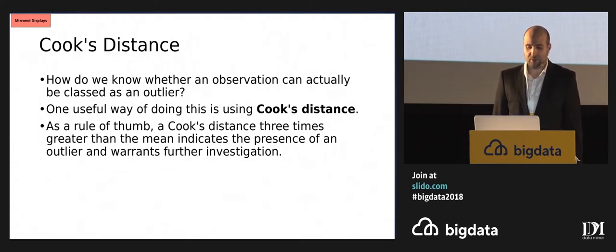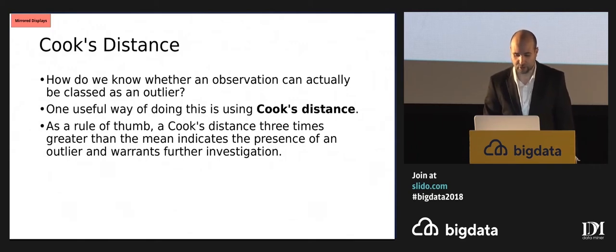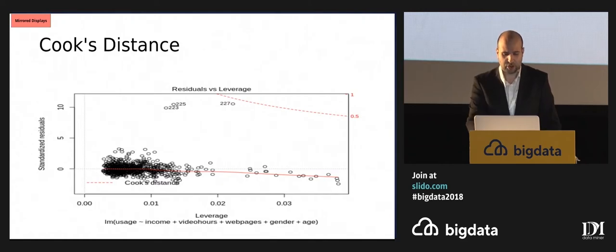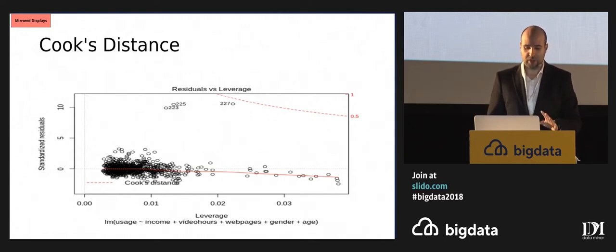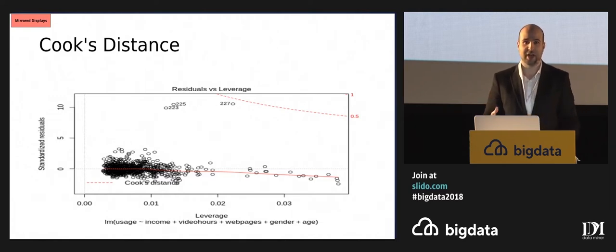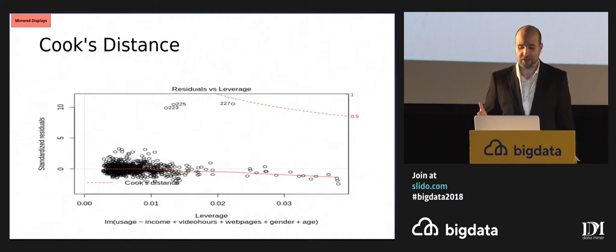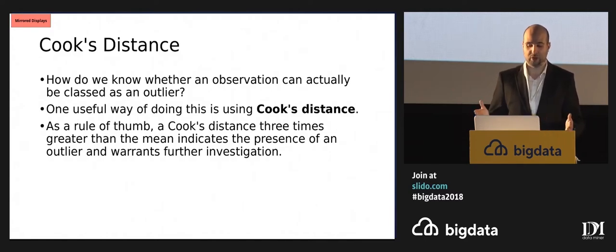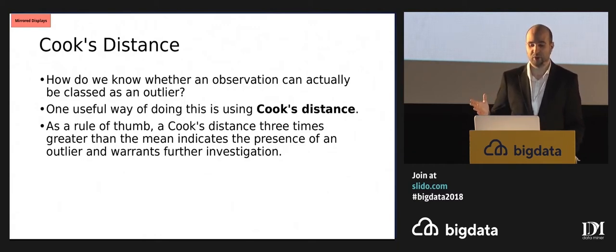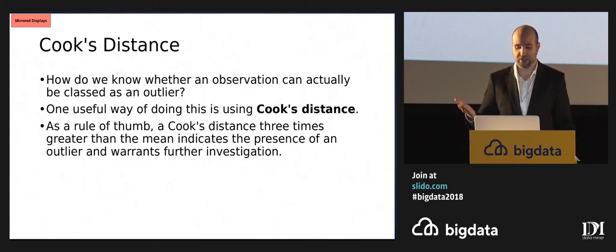In terms of how do we know whether we can actually class an observation as an outlier — you can see that we have many observations at the bottom and then three observations at the top clearly distinct from the rest. But even though we can look at a graph, we don't necessarily know if these outliers are significant. We want a mechanism to know whether these outliers are actually significant, and the way we do that is by using what's called Cook's distance. As a rule of thumb, if we have a distance of three times greater than the mean, this indicates an outlier is present and warrants further investigation.